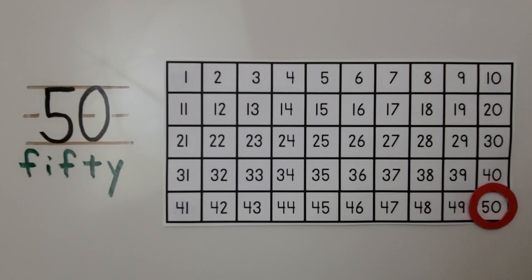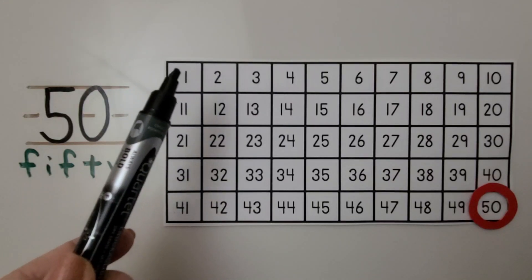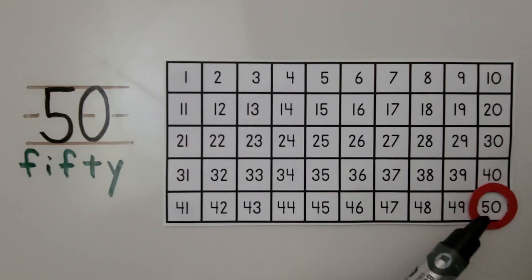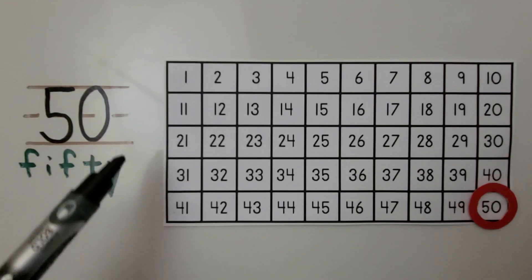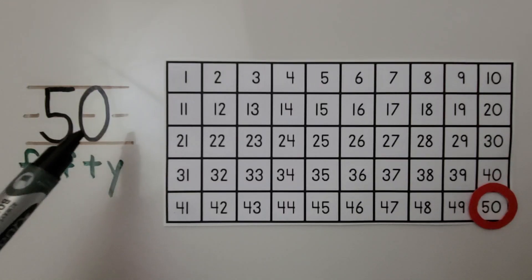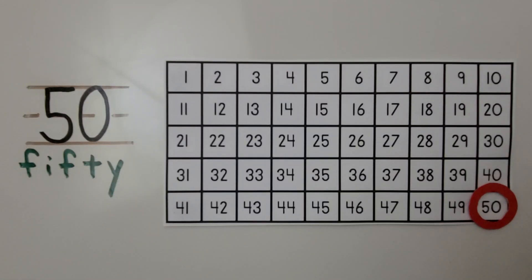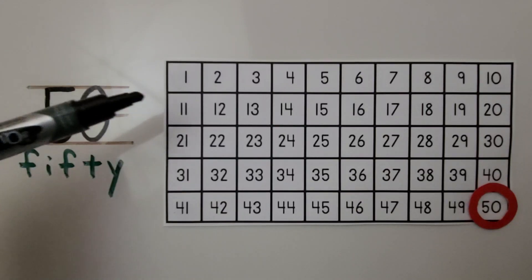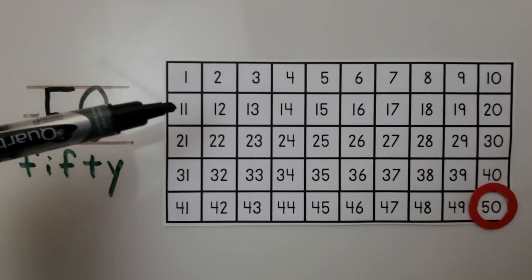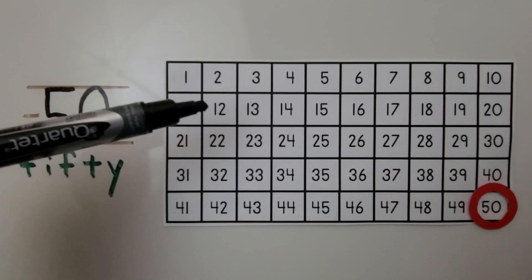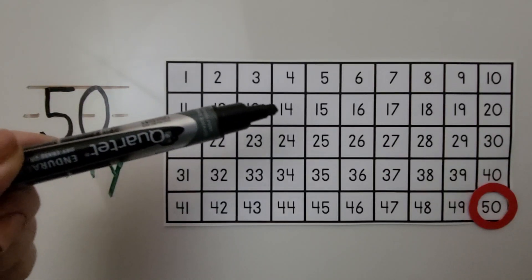Understanding the 20 chart helps us understand a 50 chart. This is a 50 chart — it goes from 1 up to the number 50. This is the number 50, it's a 5 with a 0 next to it. This is the word 50. We can see the numbers in counting order, and the second row starts with a 1 — each number starts with a 1.